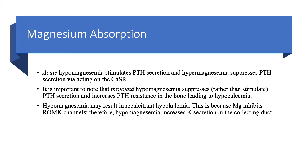The relationship between magnesium and PTH is a little confusing. Acute hypomagnesemia — an acute drop in magnesium — stimulates PTH secretion. On the other hand, hypermagnesemia suppresses PTH secretion via the calcium-sensing receptor. However, if you have profound and severe hypomagnesemia, it suppresses rather than stimulates PTH secretion, and increases PTH resistance in the bones, leading to hypocalcemia. So both hypermagnesemia and severe profound hypomagnesemia suppress PTH and lead to hypocalcemia.